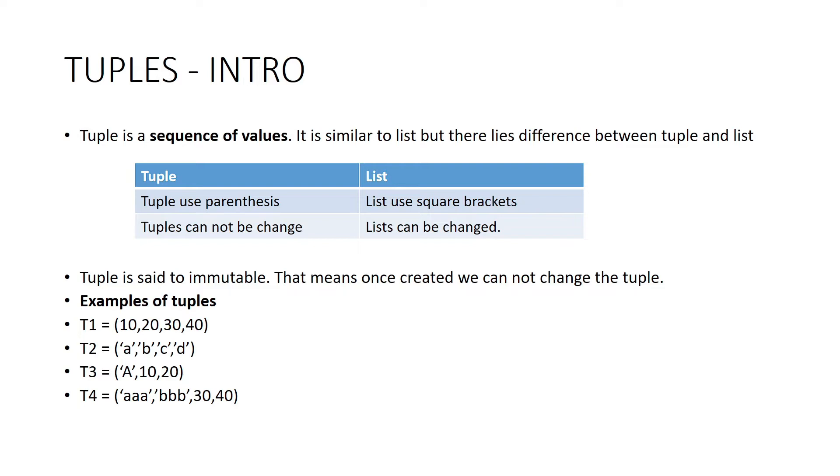Tuples are immutable. In the previous section on lists, we could add elements, delete elements, and change values. But in tuples we cannot change the values. That is the advantage of tuples - once created, we cannot change the values in the tuple.